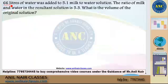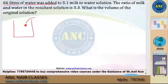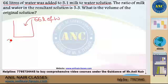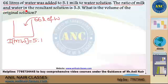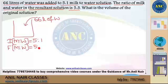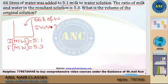See this question. 66 liters of water was added — that means there is a vessel. I am adding 66 liters of water inside the vessel to a 5:1 milk-to-water solution. The initial ratio is given as 5:1 milk and water, and the ratio of milk and water in the resultant solution is 5:3. What is the volume of the original solution? The initial volume is what they are asking, which I will call V.